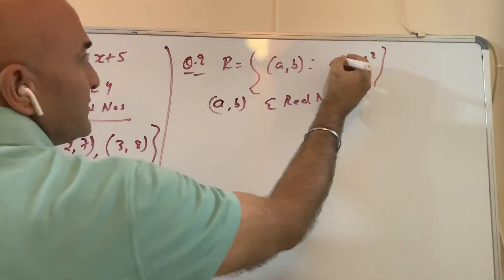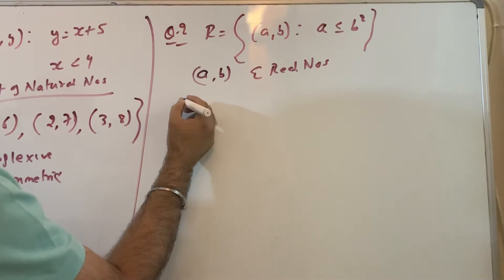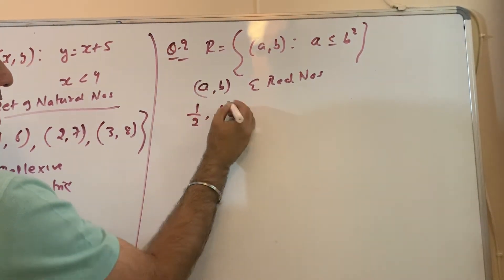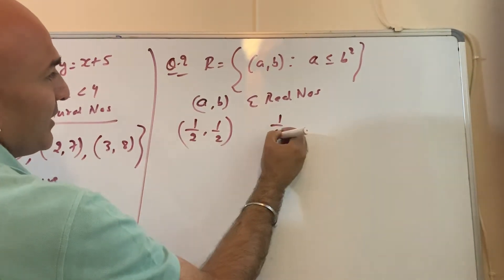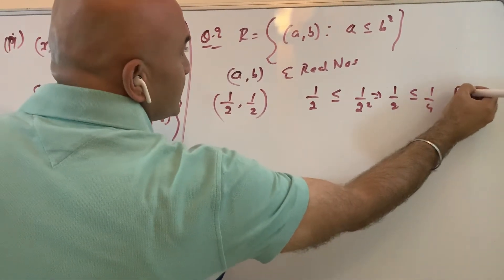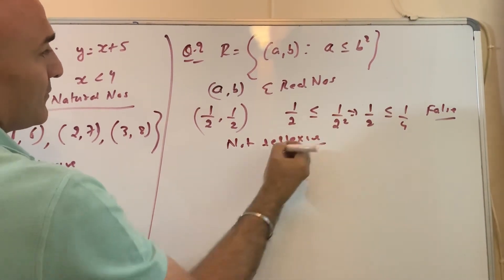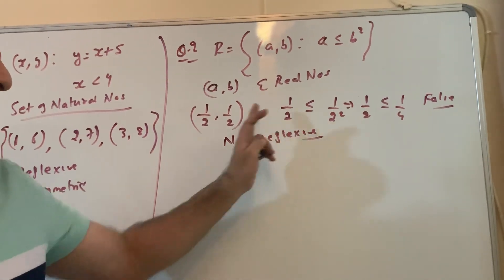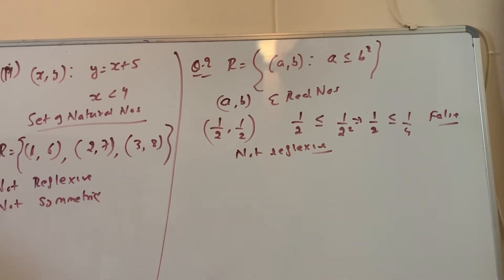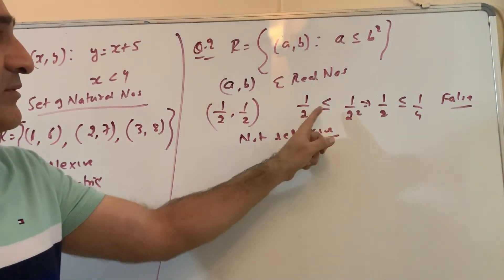Now we have to check this relation. For reflexive, take the pair (1/2, 1/2). Then check: is 1/2 less than (1/2) squared? That gives 1/2 less than 1/4, which is false. So it is not reflexive. Be careful — with fractions it will not come out to be true. So (1/2, 1/2) gives 1/2 less than 1/4, which is false.